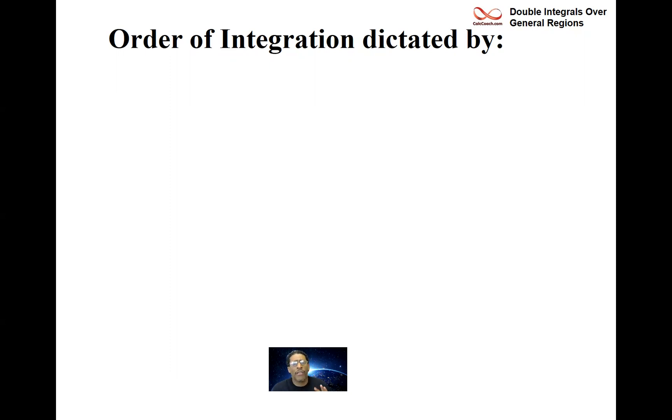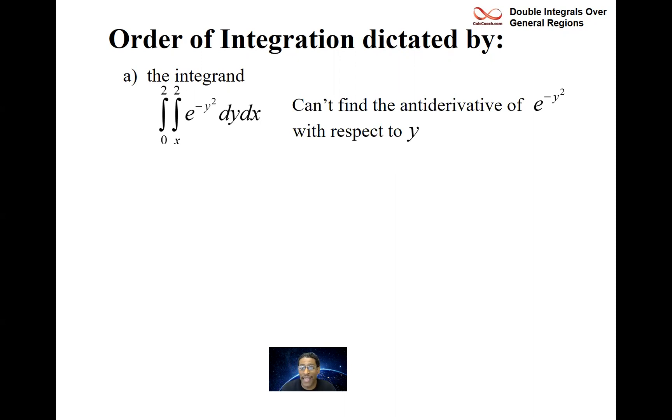First up, we're going to have the order of integration dictated to us by the integrand. There's a function that's on the inside. Here's an example. The inside function is e to the minus y squared. And we're going to figure out what the region is. But the main point though is that you can't integrate it. E to the minus y squared is lacking something that could help you be able to execute this integral in a closed form. You can't find the antiderivative of e to the minus y squared with respect to y.